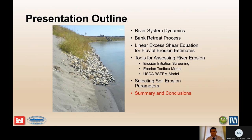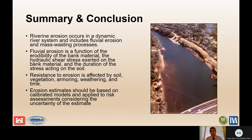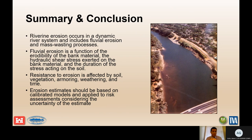In summary: riverine erosion occurs in a dynamic river system and includes fluvial erosion and mass wasting processes. It is very important to understand the system-wide dynamic nature of the river. Fluvial erosion is a function of bank material erodibility, applied hydraulic shear stress, and flow duration. Resistance to erosion is affected by soil properties, vegetation, armoring, weathering, and time. Erosion estimates should be based on calibrated models and applied to risk assessments considering the uncertainty of the estimate. The calibrated model approach gives the most confidence in your erosion estimates. Thank you.